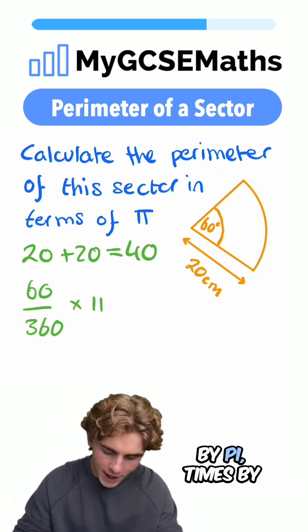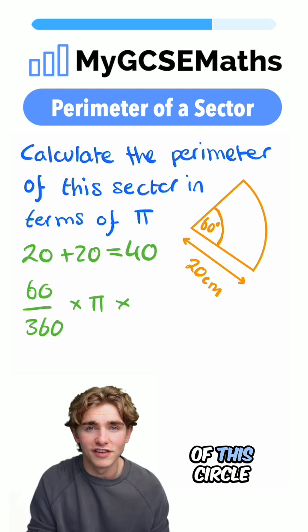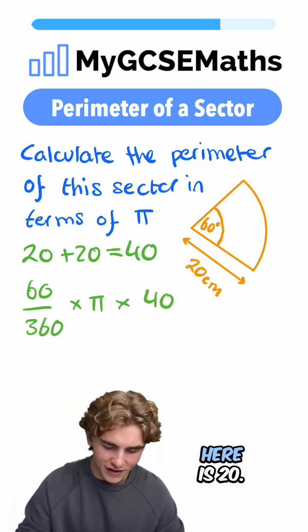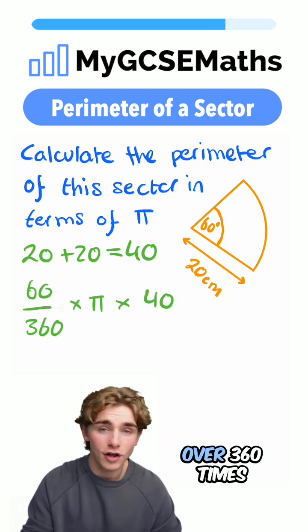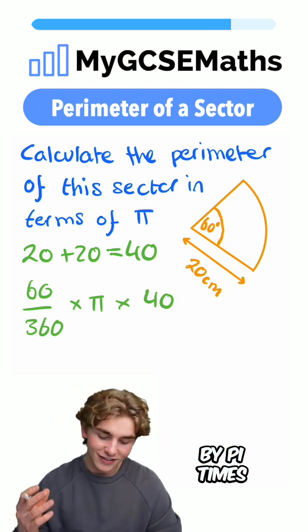So we're going to do times by pi, times by the diameter of this circle would be 40. That's because the radius here is 20. So we can do 60 over 360 times by pi times by 40.